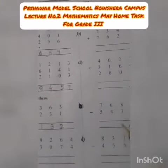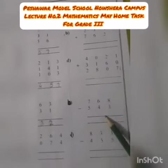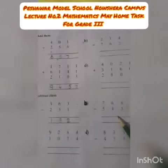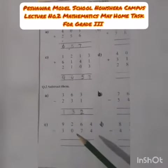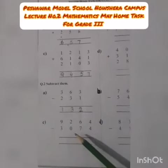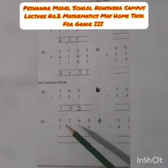You will solve the B part by the same method. Now we can turn to the C part. For C part we have a four-digit minus four-digit problem.